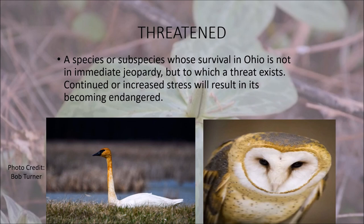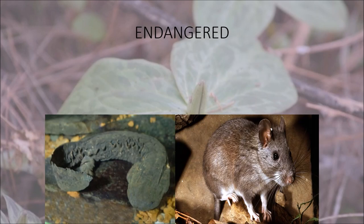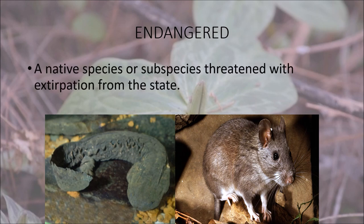For endangered, from the Division of Wildlife's perspective, it's a native species or subspecies threatened with extirpation from the state of Ohio. Allegheny wood rats and eastern hellbenders would be great examples of endangered species in Ohio.